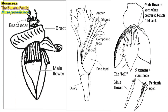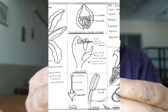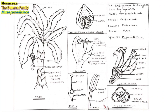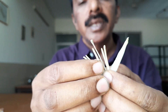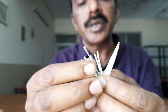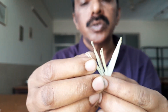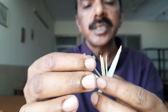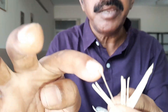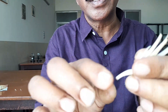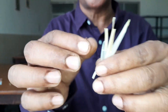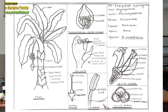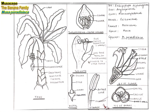There are six stamens in two whorls of three each. Five of them are fertile stamens and the sixth is a sterile stamen called a staminode. There is a style and a tripartite stigma, and the ovary is inferior. It is tricarpellary, syncarpous, trilocular, with many anatropous ovules on axile placentation.